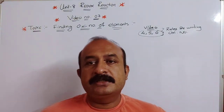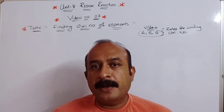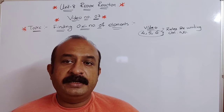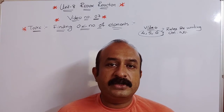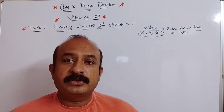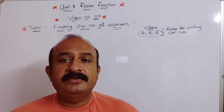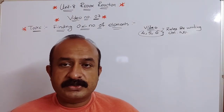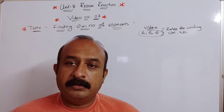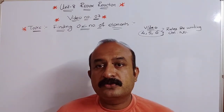When assigning oxidation numbers, remember certain rules about oxygen, hydrogen, and halogens. Hydrogen is plus 1 normally, but when attached to a metal — like in sodium hydride NaH — it is minus 1. Oxygen is usually minus 2, but in superoxides it is minus 0.5, and in peroxides it is minus 1. For halogens, fluorine is always minus 1, while chlorine, bromine, and iodine can have positive or negative oxidation numbers.